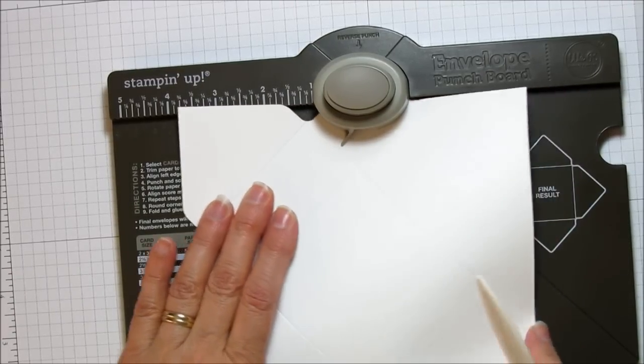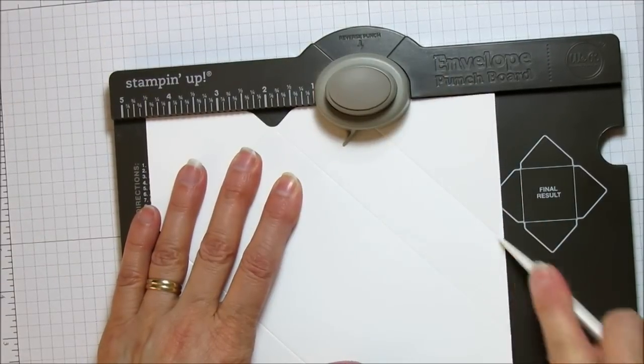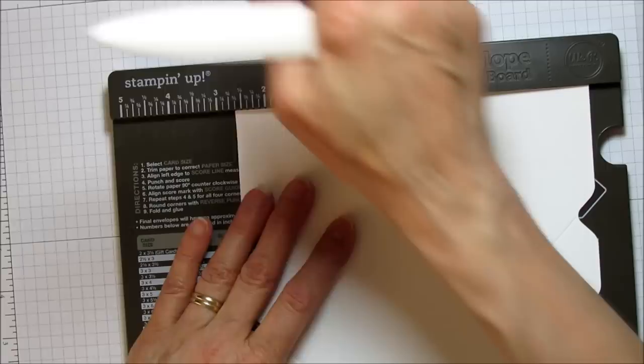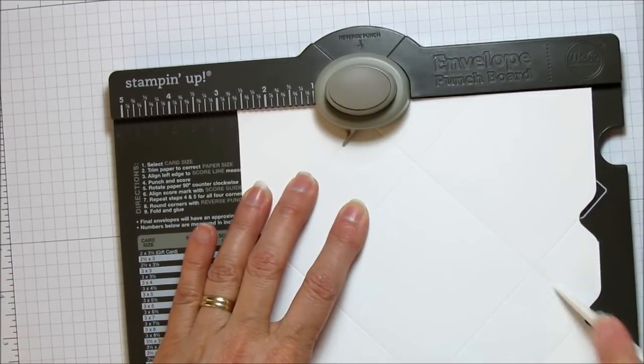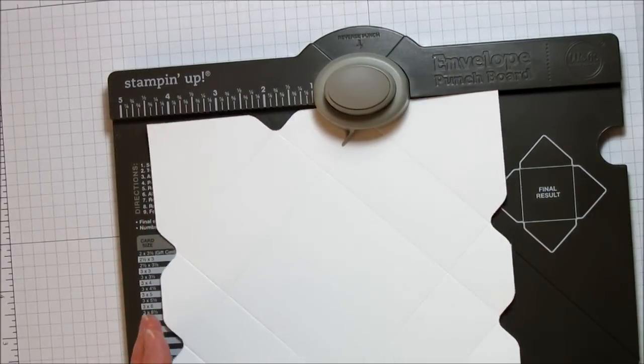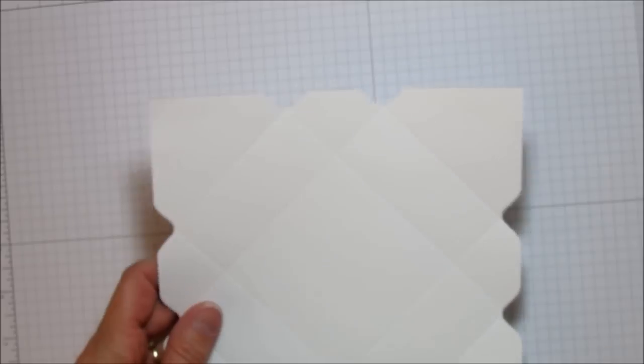And then rotate it again, do the exact same thing, and you're going to do this all the way around. So move it over, punch it and score it, and then turn it, punch it, score, and one more time, punch it and score it. So that's it for that one.